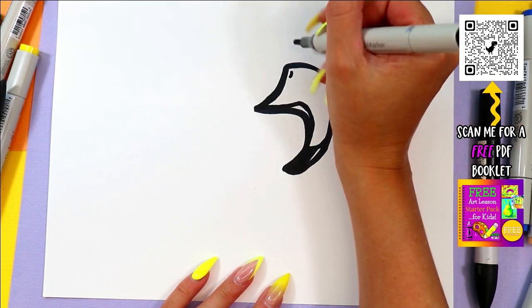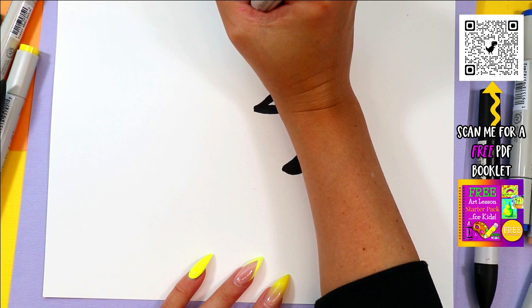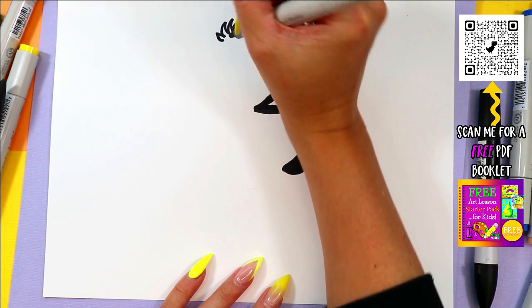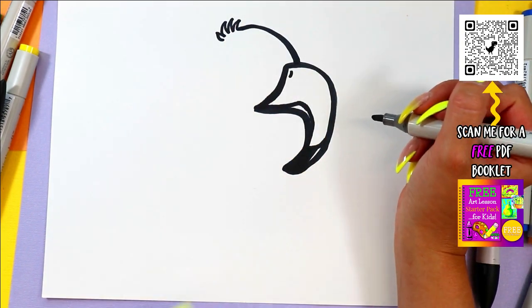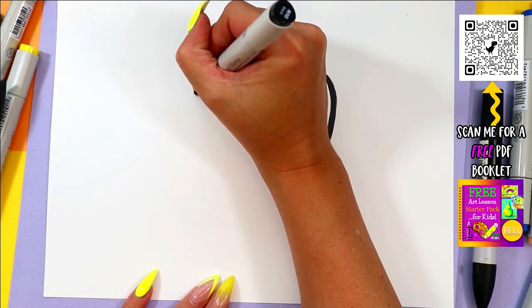All right, next we're going to draw a flamingo's head. I'm going to draw a nice curling line up. I like to add a little fluffy detail on the top of the head with some zigzag lines to make it extra cute. Bring it around.